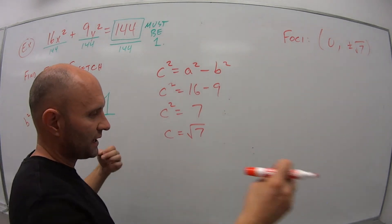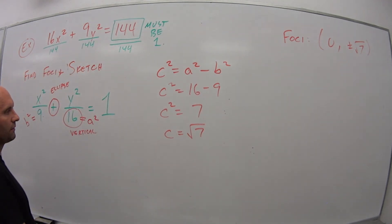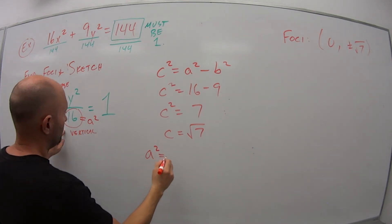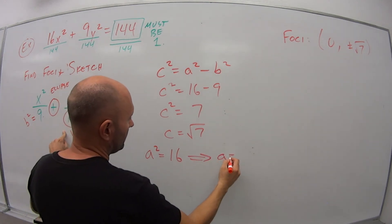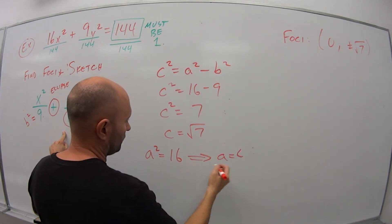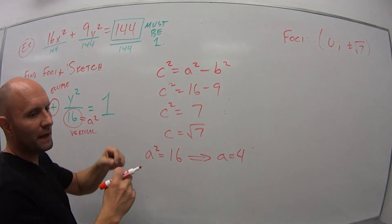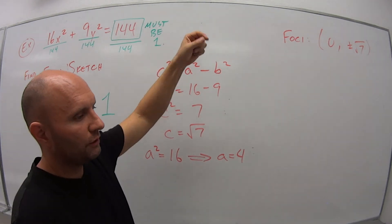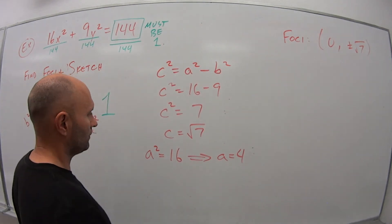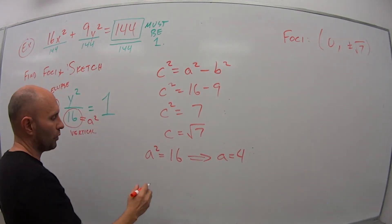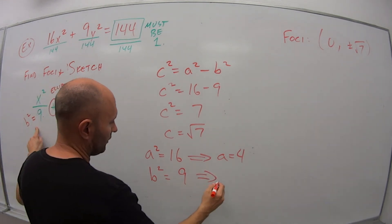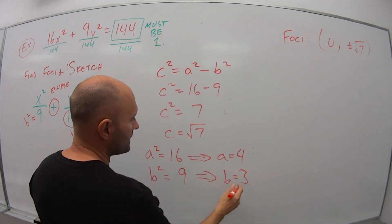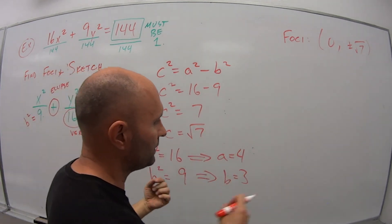If I want to sketch this, I kind of need to know the lengths and widths, my a's and b's. So my a squared is equal to 16, which means that a is equal to the square root of that, which is 4. So my major axis is 4 units up, 4 units down, because we're centered at the origin. b squared is equal to 9, so b is equal to 3. So 3 units left, 3 units right.